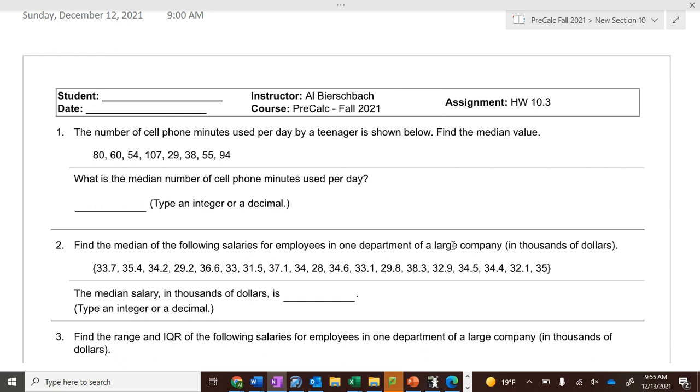So you start with 29, then 38, then 54, then 55, then 60, then 80, 94, 107. What are my two middle numbers?